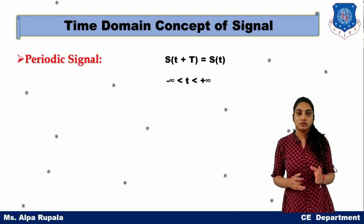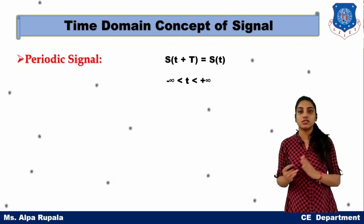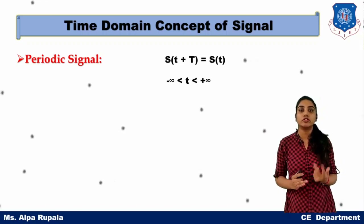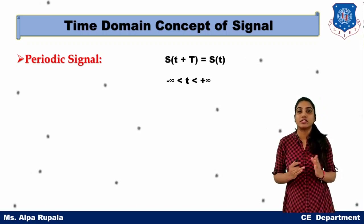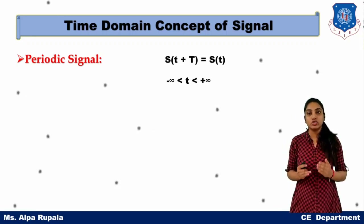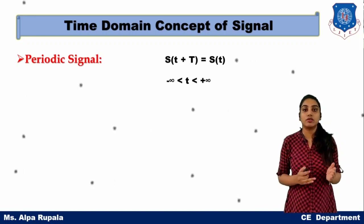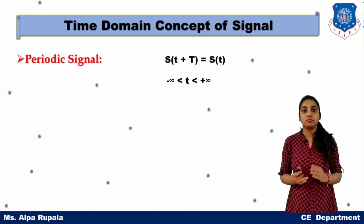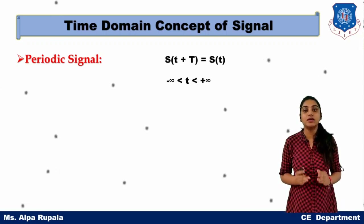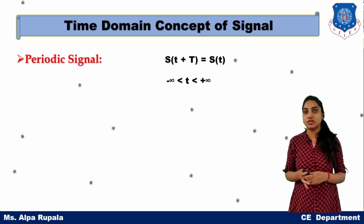Just as we can divide a signal into analog and digital types, we can also divide it into periodic signal and aperiodic signal. A periodic signal is a kind of signal which repeats its pattern for a particular interval of time.